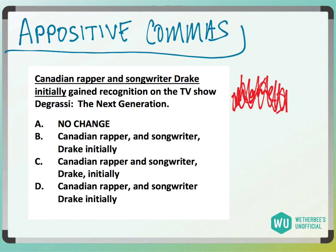So we have: 'Canadian rapper and songwriter initially gained recognition on the TV show Degrassi: The Next Generation.' When we have the name here, a lot of people will pick answer choice C and put the commas around the name, just thinking you always put a name in commas. But let's cross off the name with the commas and read through: 'Canadian rapper and songwriter initially gained recognition on the TV show Degrassi.' We couldn't say that.